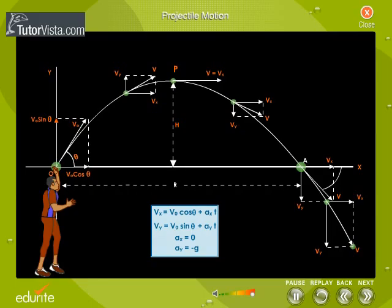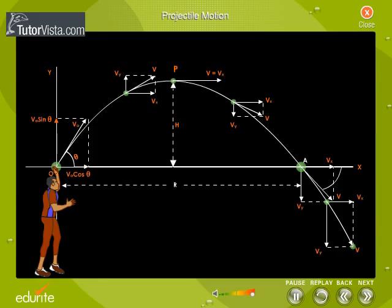Substituting the value of ax and ay in equations 1 and 2 respectively we get, that is, the vertical component of velocity changes with time and at the highest point the Vy becomes 0.